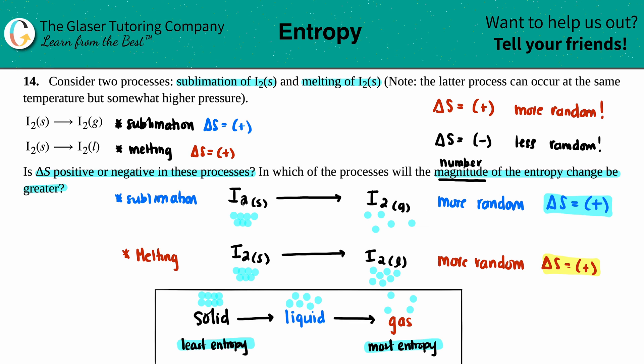Well, if you're going to something that's way more random than just a little bit random, the extremes would have the greater number. So since we're both starting off as a solid, but since I went to a way more random place than just the liquid, the sublimation would have the greater magnitude.